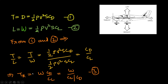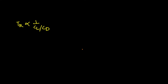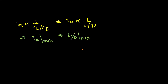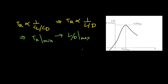So this is our third equation: TR equals W times CD/CL, or W divided by (L/D). From equation 3, TR is proportional to CD/CL, so as the ratio CL/CD increases, thrust required decreases. Hence thrust required is proportional to 1 upon L/D, and for minimum thrust required we require maximum L/D ratio. So if the aircraft is flying at a setting where its L/D ratio is maximum, thrust required will be minimum.